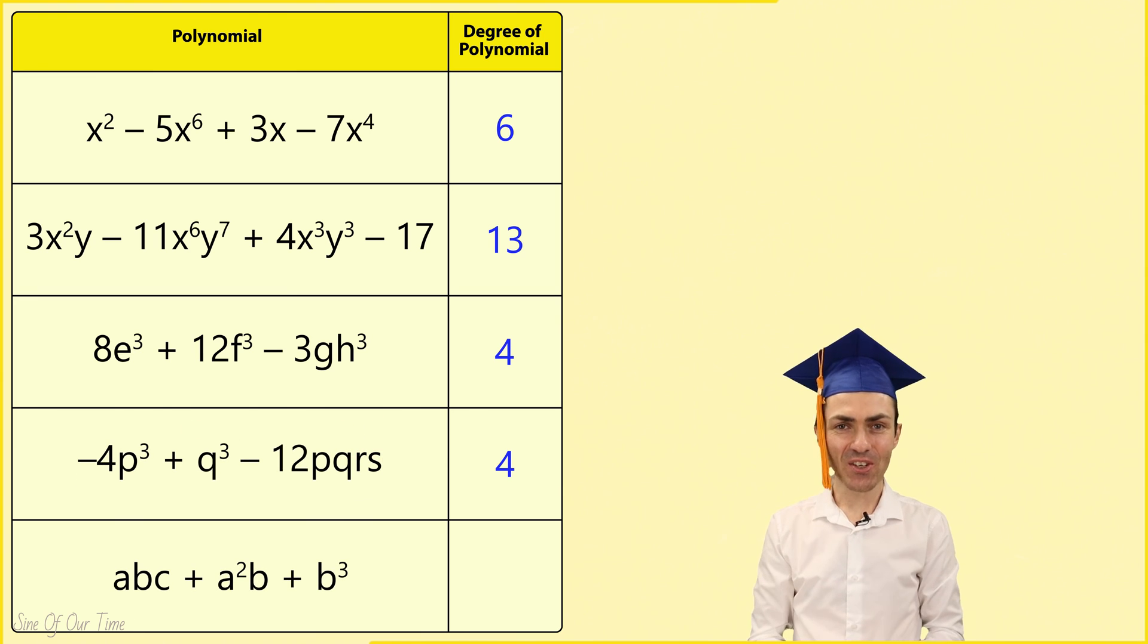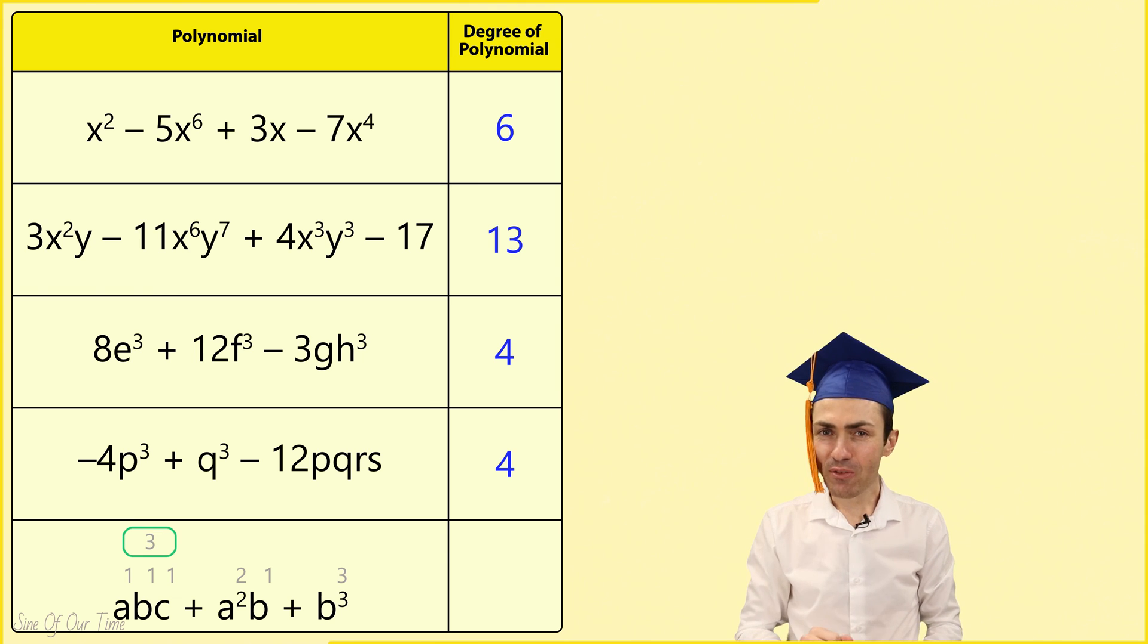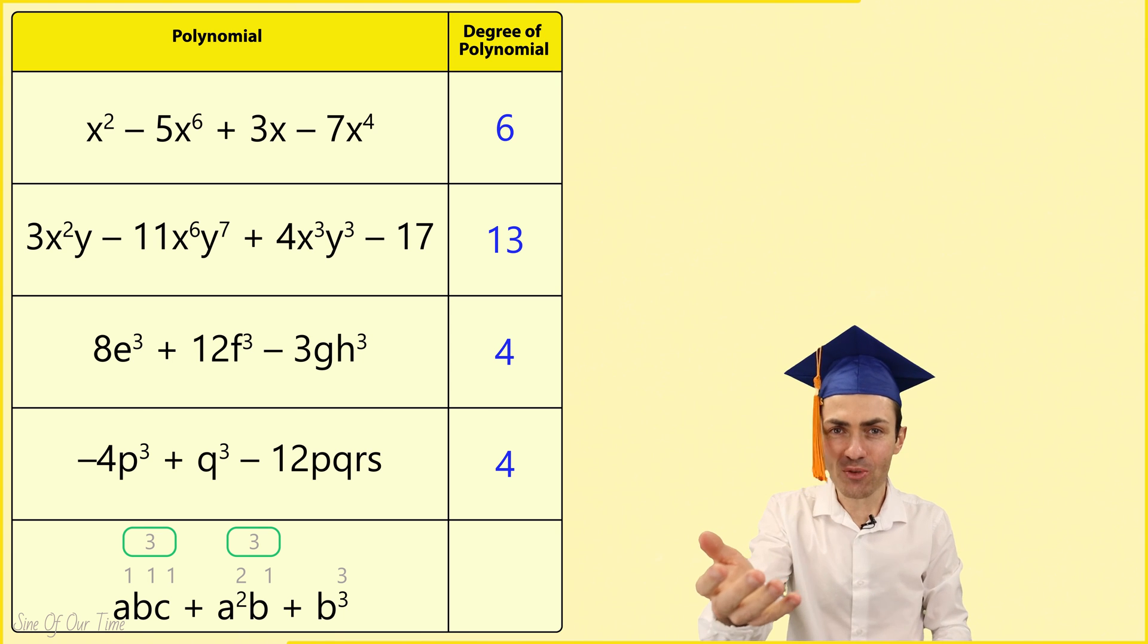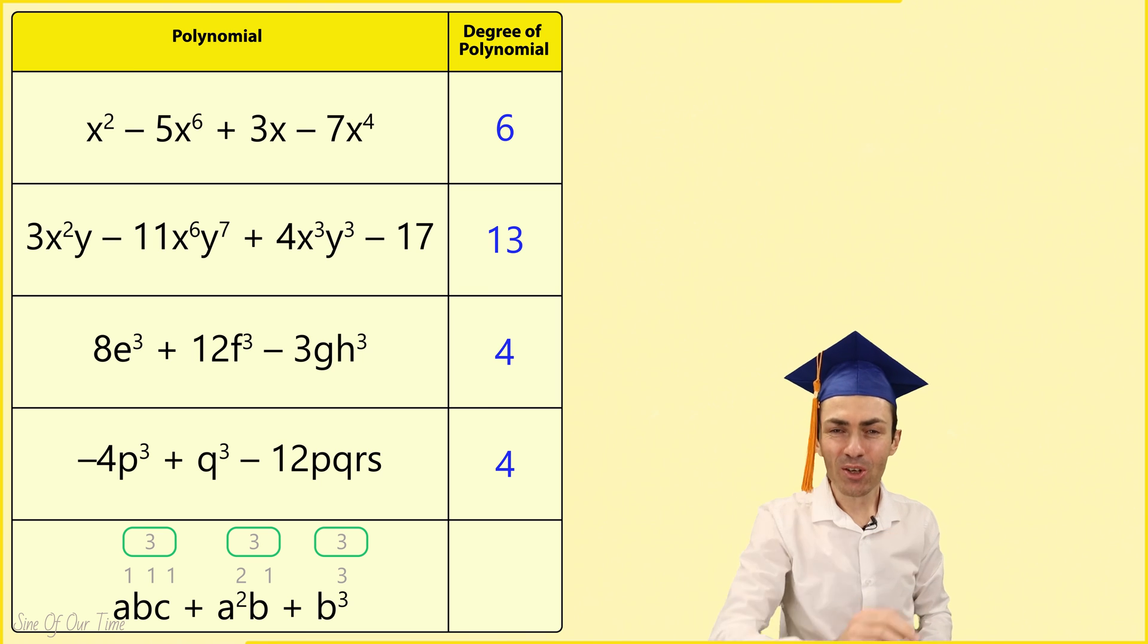Finally in this last example we notice that the degree of term 1 is 3, the degree of term 2 is 3, and the degree of term 3 is also 3. 3 is all around. That's not a problem. We can still conclude that the degree of this polynomial is 3.